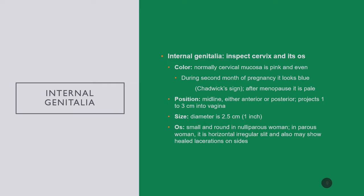The position of the cervix should be midline—it can be anterior or posterior and can project anywhere from one to three centimeters into the vaginal opening. The diameter of a normal cervix is roughly an inch, and the os should be small and round prior to pregnancy or delivery. In women who've had a vaginal delivery, once the cervix has dilated it never fully closes back down, becoming more horizontal. If there were lacerations or trauma, old scars or injuries may show on the surface of the cervix.